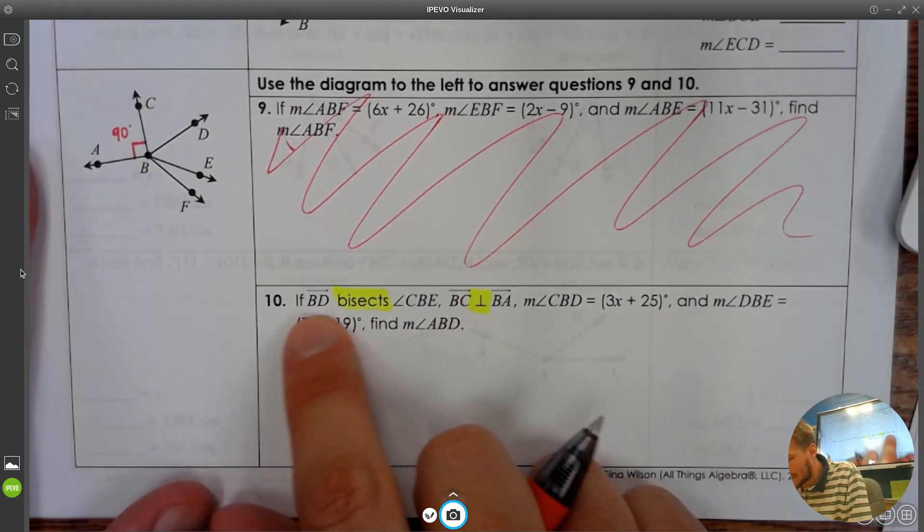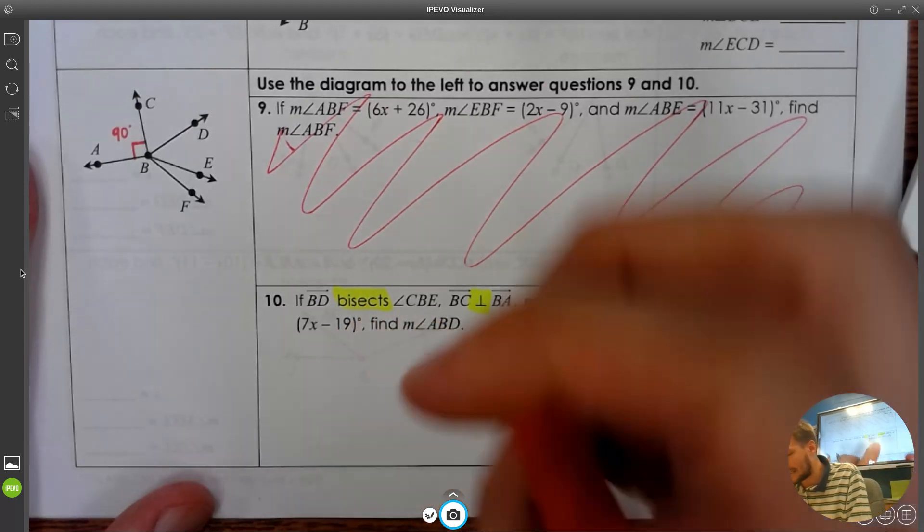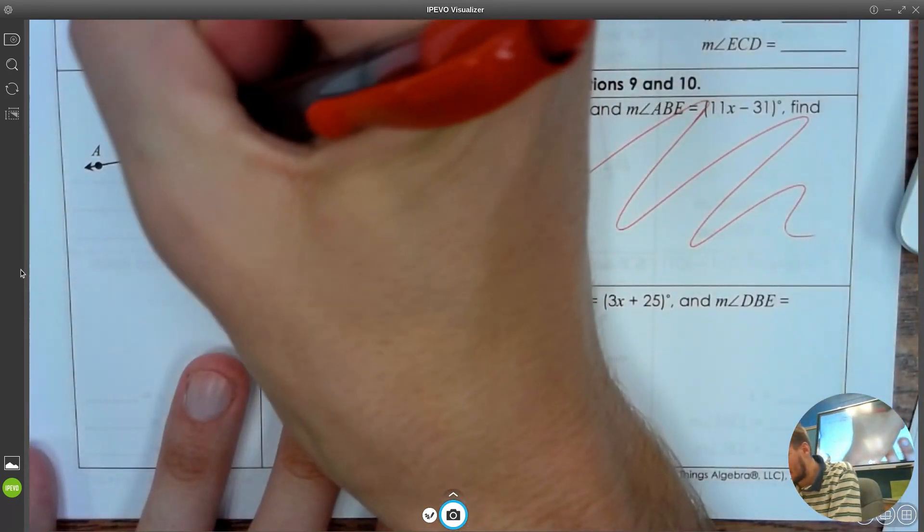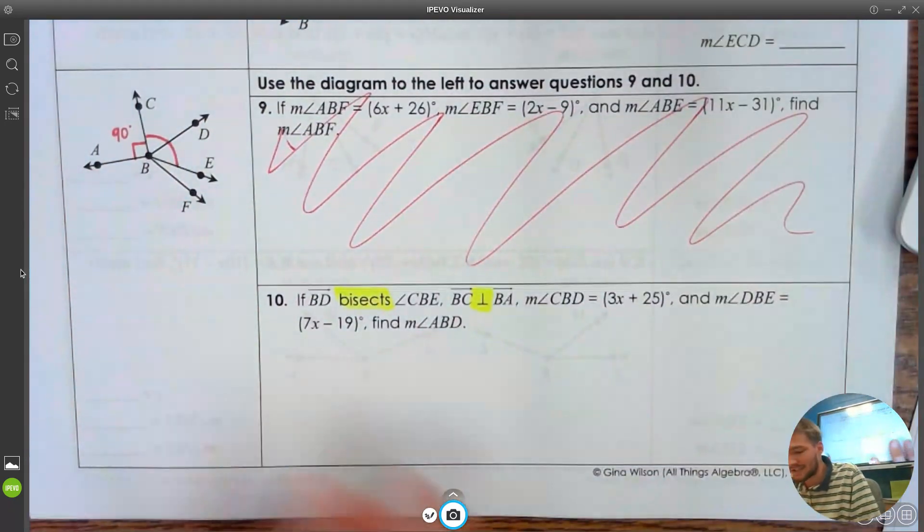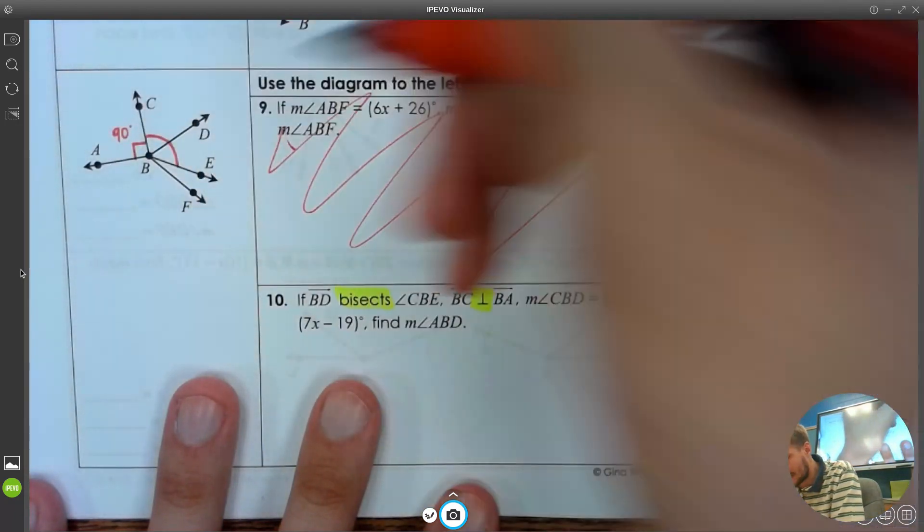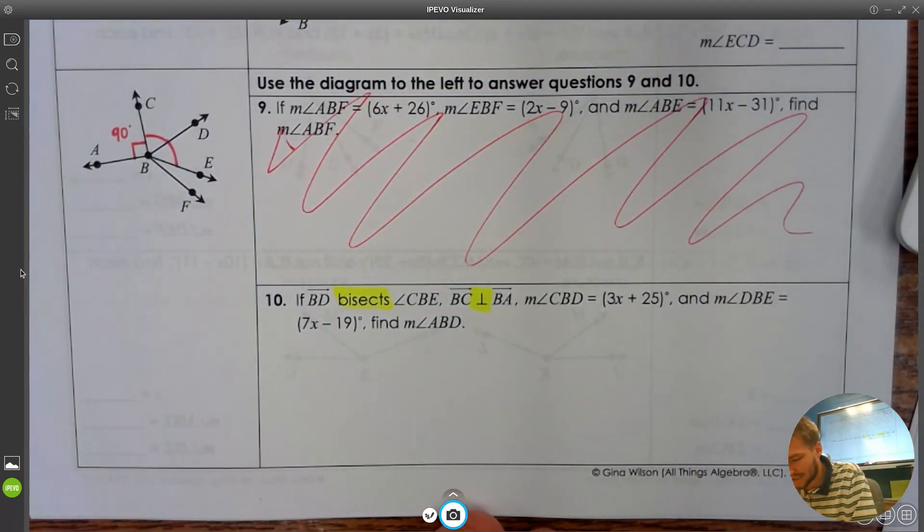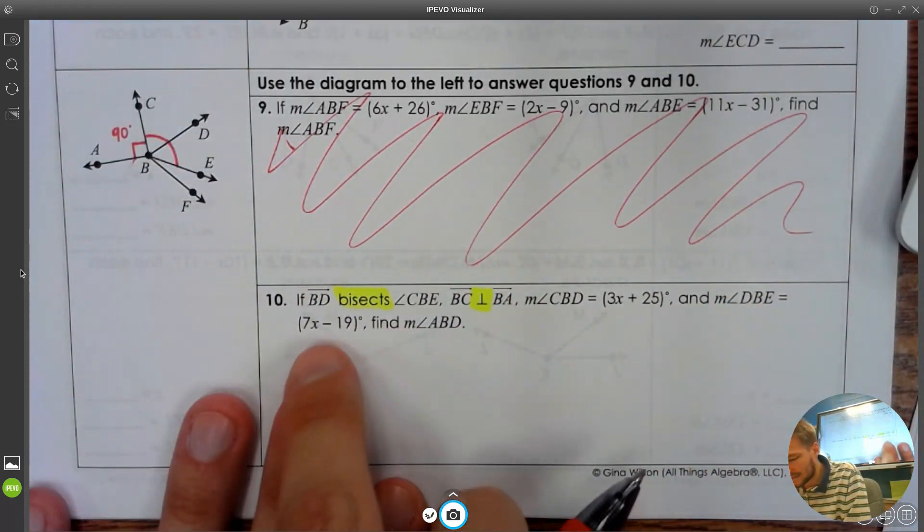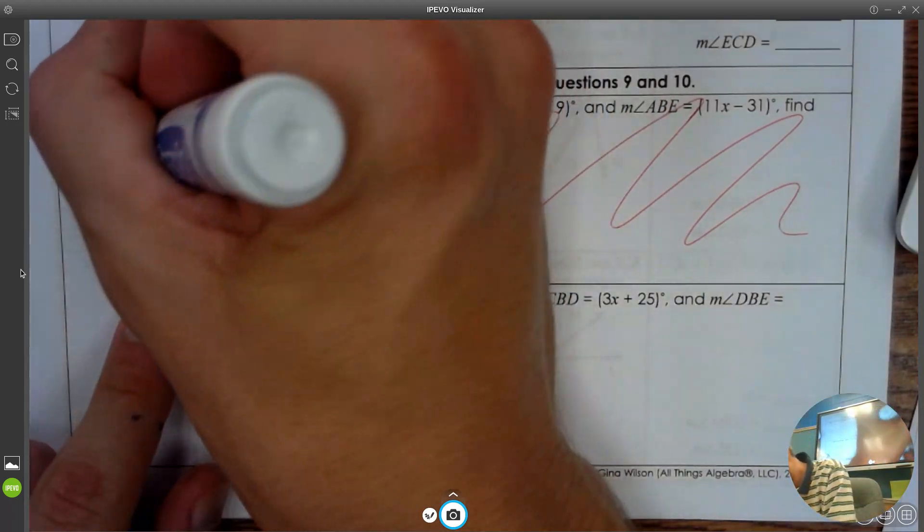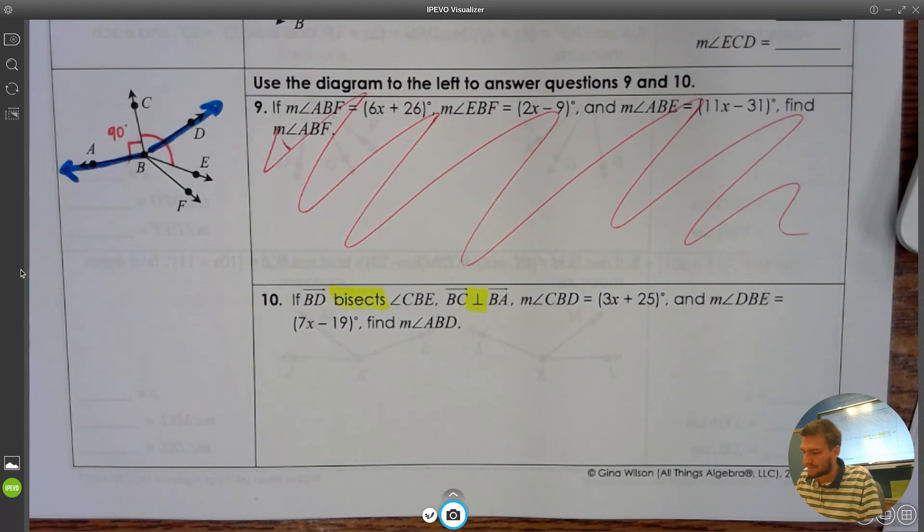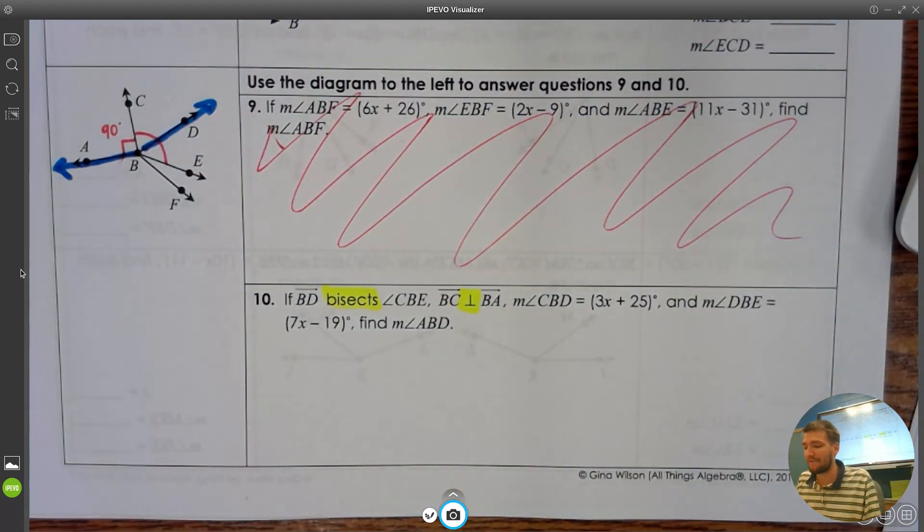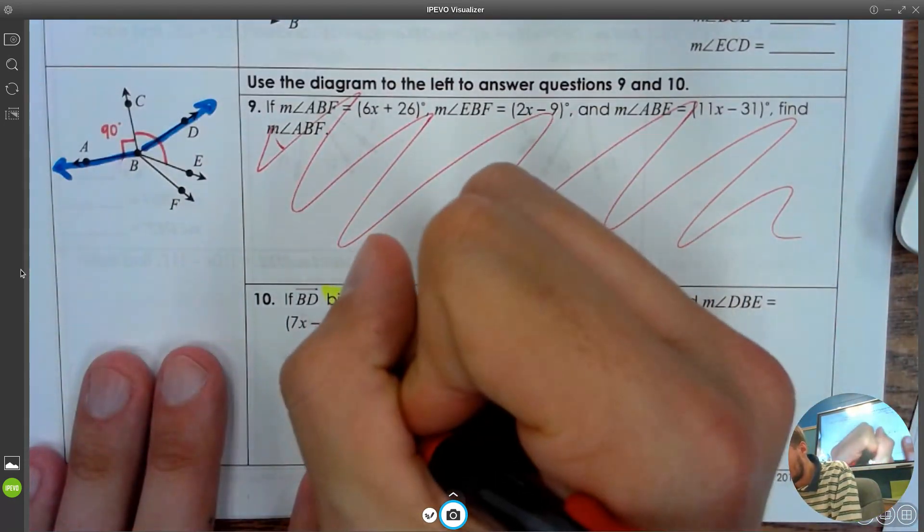We get a little bit of information there. If we know it's perpendicular and we know that it gives us a little nice right angle, what degree do we know that that right angle has to be? We know that's got to be 90. So we get a little bit of information there. Let's see if we can put all this together. BD is bisecting CBE, which means these should be equal measurements. CBD and DBE should be equal measurements. We get that CBD is equal to this, and we're trying to find the measure of ABD.